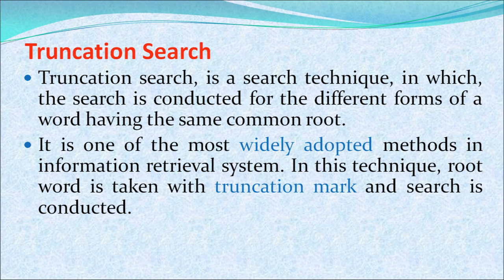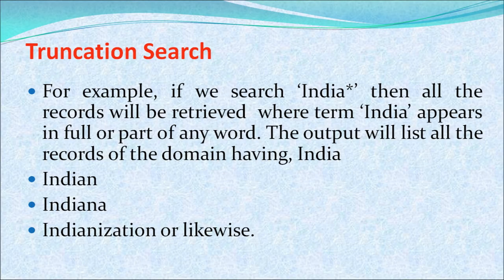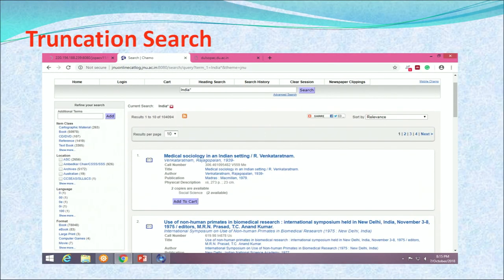Truncation search is a search in which the search is conducted for different forms of a word having the same common root. It is one of the most widely adopted methods in information retrieval. In this technique, a root word is taken with a truncation mark and the search is conducted. For example, if we search 'India' with a truncation mark, all records will be retrieved where the term India appears as part of any word — the output will include terms like Indiana and Indianization.